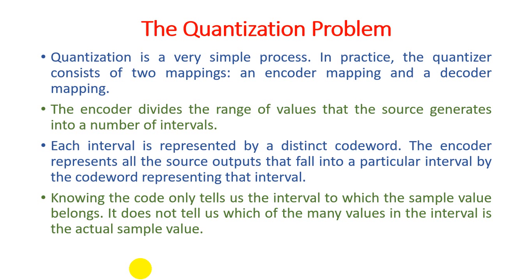This is a problem: if the encoder sends five, the decoder knows the value is five, but it doesn't know whether the original value was one, two, three, five, six, seven, nine, or ten. So it does not tell us which of the many values in the interval is the actual sample value. If you consider one to ten range, there are many possible values like 1.1, 1.2, up to 1.9, then 2.1 to 2.9, so all values need to be represented.